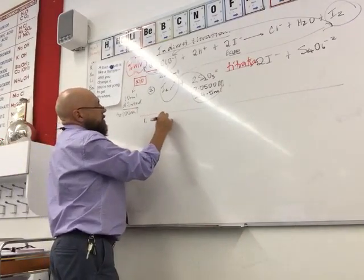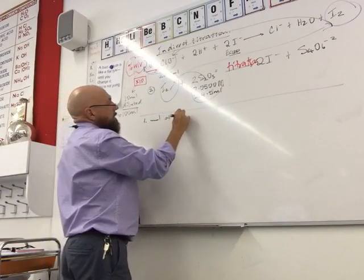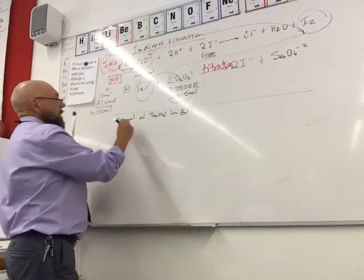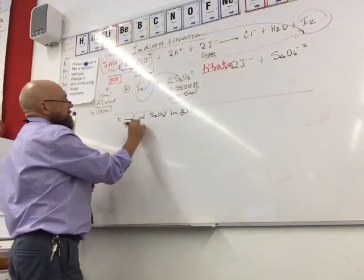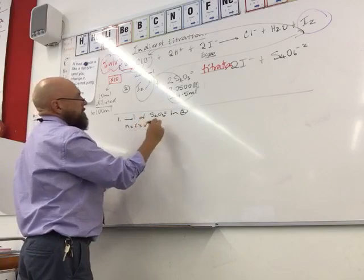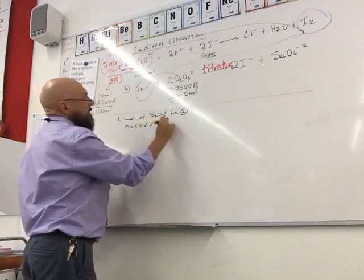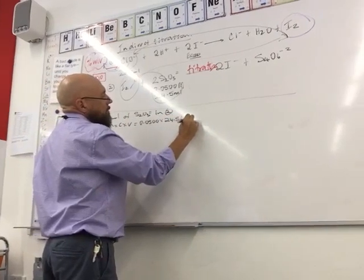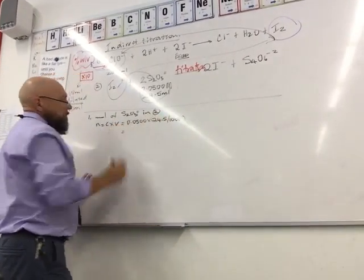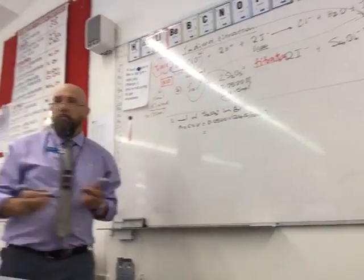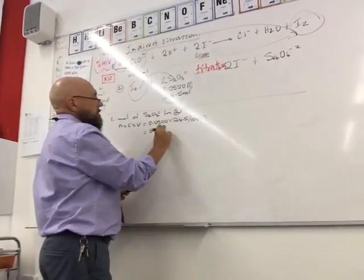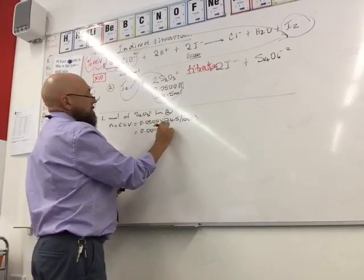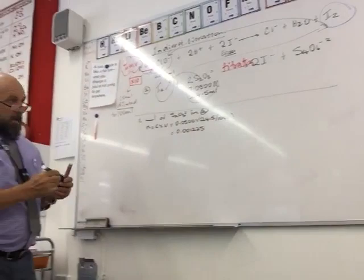We want to work out the moles of S₂O₃ in equation two. Using n = C × V, the concentration is 0.0500 mol/L and the volume is 24.5 mL (24.5/1000 L), giving us moles of S₂O₃ = 0.001225 mol.